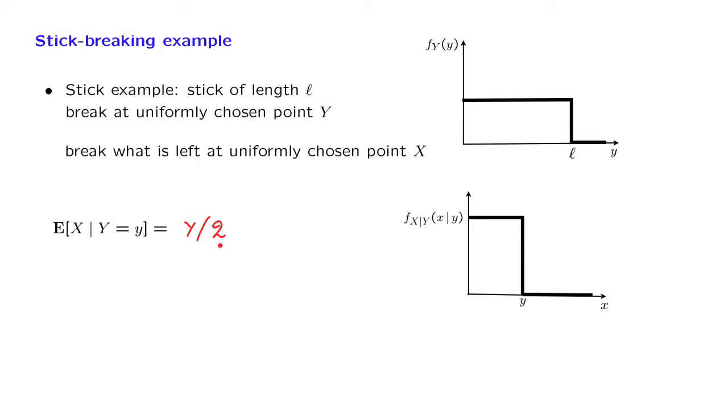Now let us convert this concrete equality between numbers to a more abstract equality between random variables. This object is a random variable that takes this value whenever capital Y is little y. So this is an object that takes the value little y over 2, whenever the random variable capital Y happens to be little y. But that's the same as the random variable capital Y over 2.